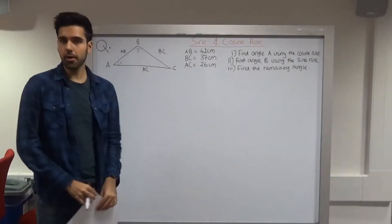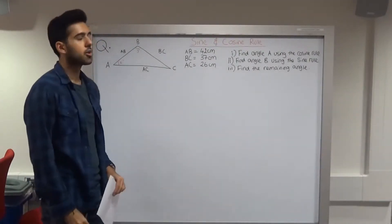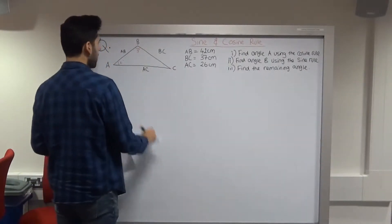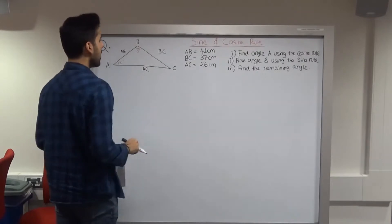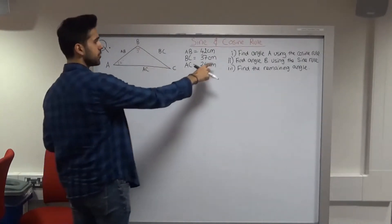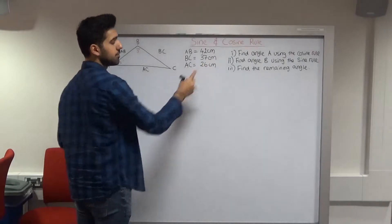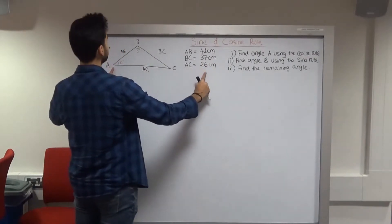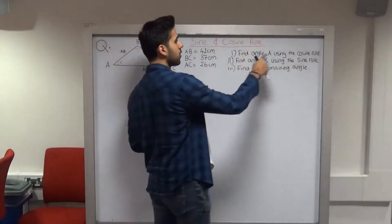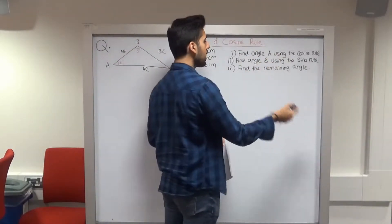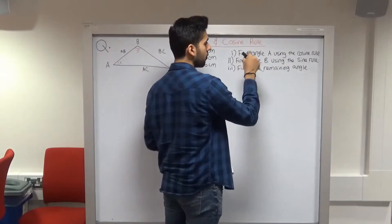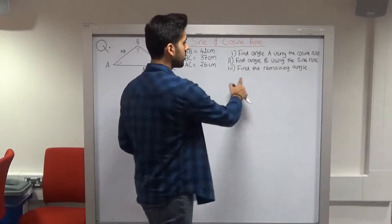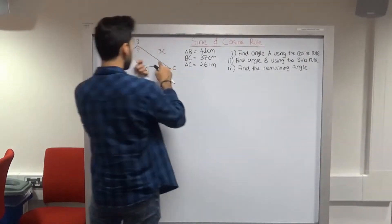Hi everyone, my name is Salman and today we're going to be learning about the sine and cosine rule, specifically for this question given over here. The question says that we have a triangle ABC where the length AB is 42 cm, BC is 37 cm, and AC is 26 cm. The first part asks us to find angle A using the cosine rule, then find angle B using the sine rule, and lastly, using your knowledge of triangles, find the remaining angle C.